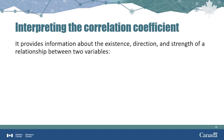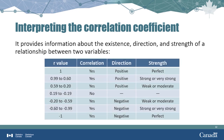The correlation coefficient r provides information about the existence, direction, and strength of a relationship between two variables. In reality, an r value is rarely equal to exactly negative 1 or 1. This table provides general guidelines: if an r value is negative 0.6 or lower, we have a strong negative relationship; if its value is 0.6 or higher, we have a strong positive relationship. If r is between negative 0.59 and negative 0.2, we have a weak negative relationship; between 0.2 and 0.59, a weak positive relationship. Finally, if the correlation coefficient is between negative 0.19 and 0.19, we do not have enough evidence to say that the two variables are correlated.